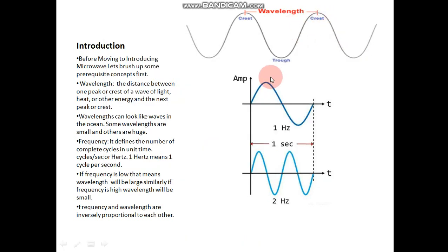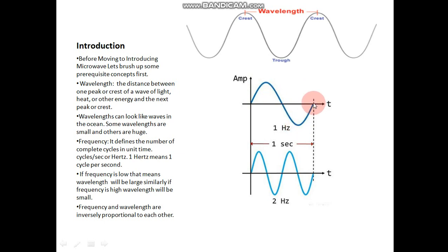This is the wavelength. Now what is the frequency? This is one complete cycle. The number of complete cycles passing through a particular point in one second is your frequency. Here you can see this is the time axis. Fix a point and see how many full cycles pass through that point in one second. Here only one cycle is passing in one second, so the frequency is one hertz. Here two cycles are passing in one second, so the frequency is two hertz.